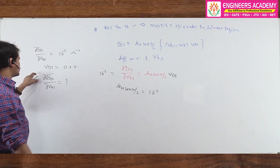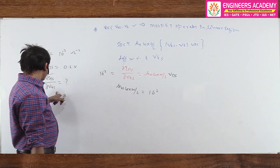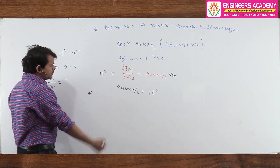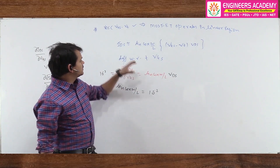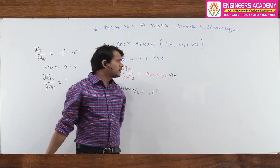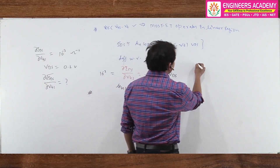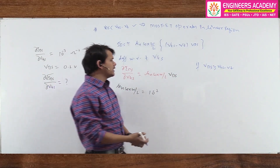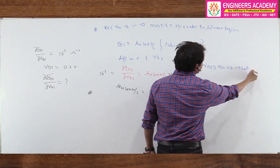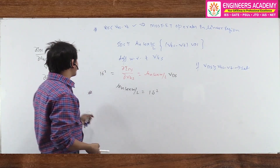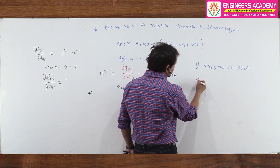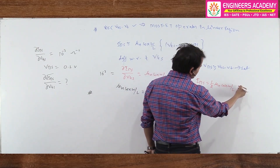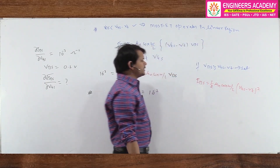Now we need the slope of √IDS versus Vgs. In the saturation region, when Vds ≥ (Vgs − Vt), the current equation becomes: IDS = ½·μn·Cox·(W/L)·(Vgs − Vt)². Taking the square root of both sides: √IDS = (1/√2)·√(μn·Cox·W/L)·(Vgs − Vt).